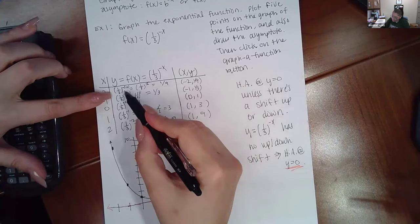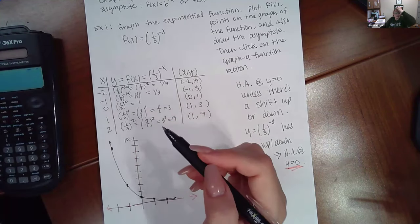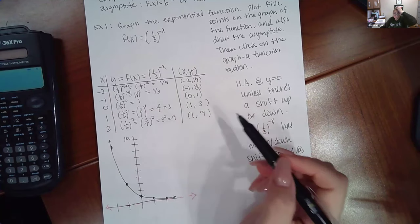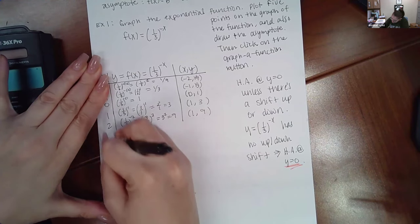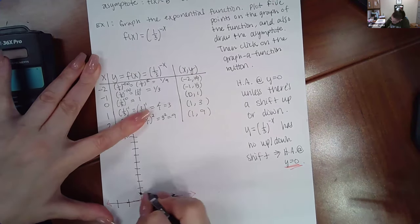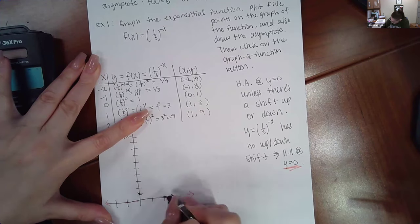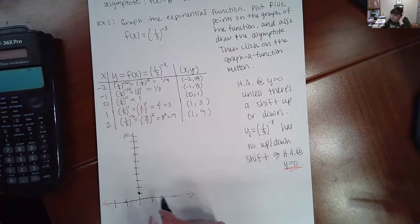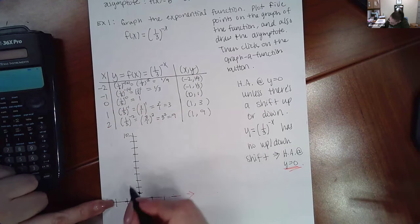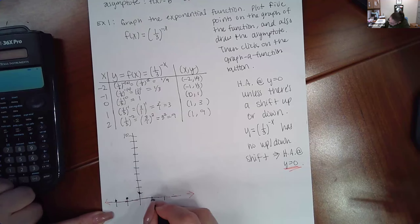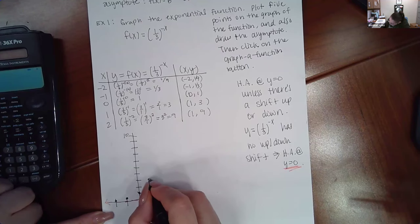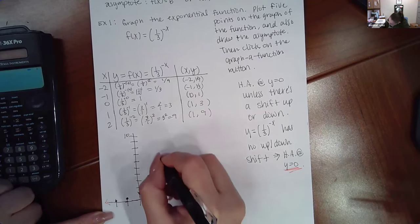Now, you could type all of these expressions in your calculator just as they are, and you will get these exact same y values. So what's happening here is that these are actually the wrong points. So I should have had negative two and negative one ninths, then negative one and one third, then zero and one, and then one and three, and then two and nine.